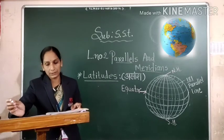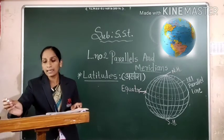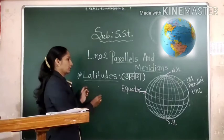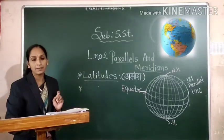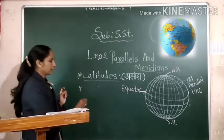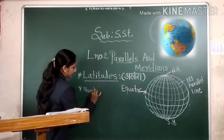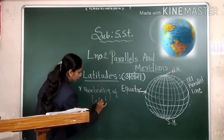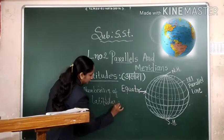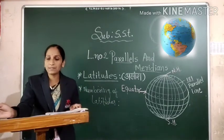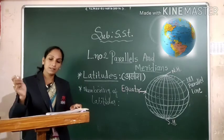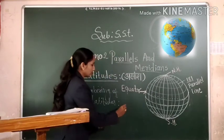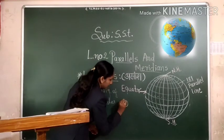So numbering of latitudes. Numbering of latitudes. Lines of latitudes are labeled in degrees, written as zero degree. And here are the lines, written as degrees, like that.